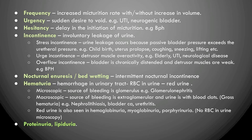Incontinence is involuntary leakage of urine. Stress incontinence occurs when urethral or bladder pressure is increased — for example in pregnancy, coughing, sneezing, uterus prolapse, or lifting heavy objects. Urge incontinence is when a person has a sudden desire to void and urine leaks out, mostly due to overactivity of the detrusor muscle of the bladder, seen in elderly patients, UTIs, or neurological diseases like stroke.